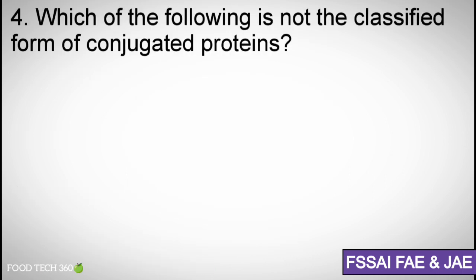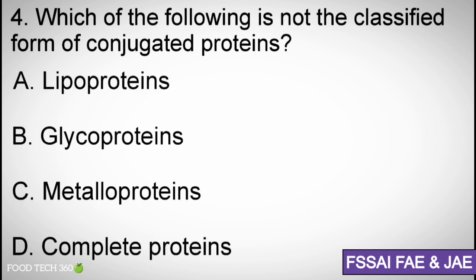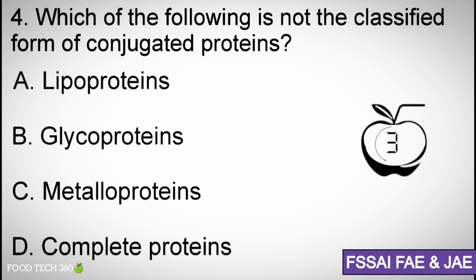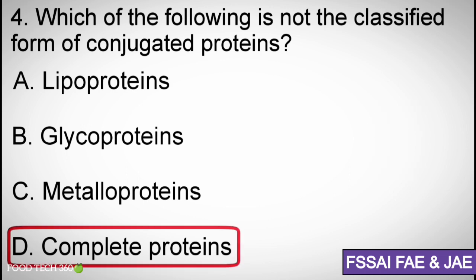Question number 4: Which of the following is not a classified form of conjugated proteins? A. Lipoproteins, B. Glycoproteins, C. Metalloproteins, D. Complete proteins. Correct answer: D. Complete proteins.